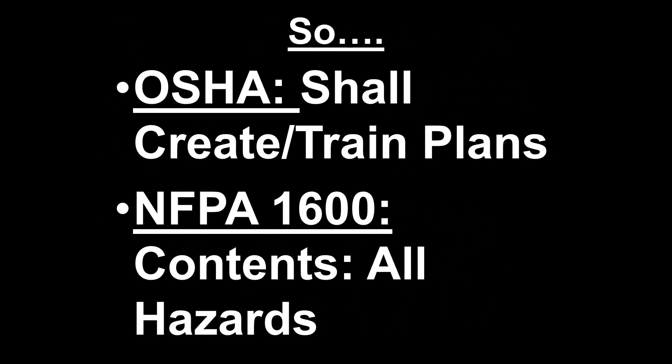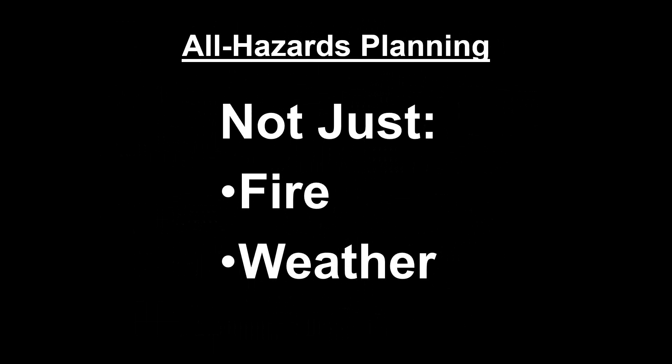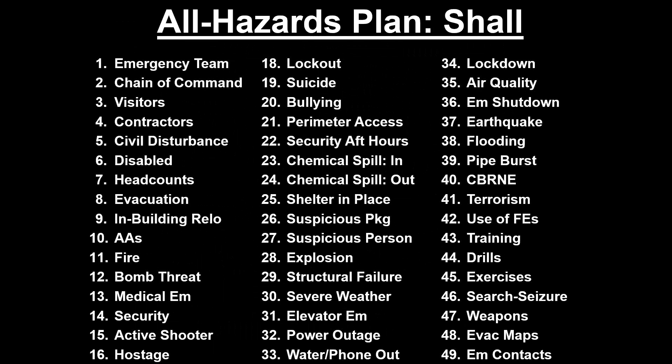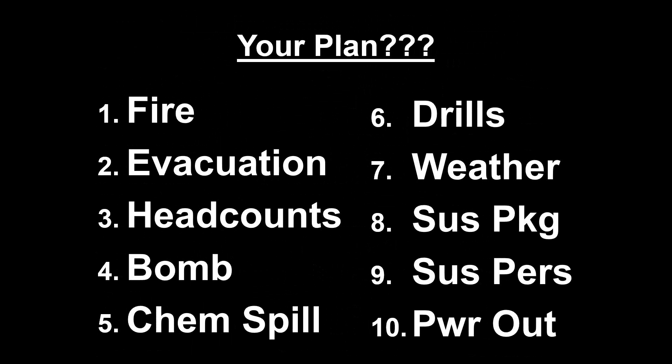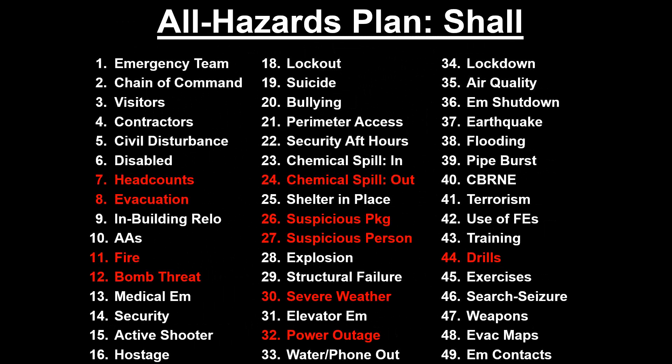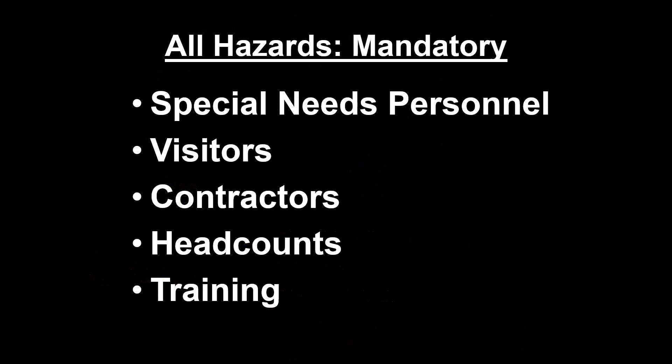OSHA says you shall create and train emergency action plans; NFPA 1600 sets the contents, which are all about all hazards. All hazards means this is not your father's fire plan — it covers not just fire and weather but everything foreseeable. The law says you shall plan for foreseeable circumstances. Other federal requirements include protecting special needs personnel, visitors, contractors, and embedded contractors; conducting head counts during emergencies; and training everybody.